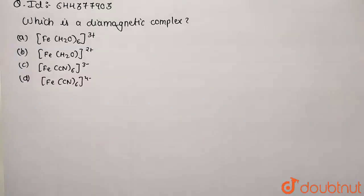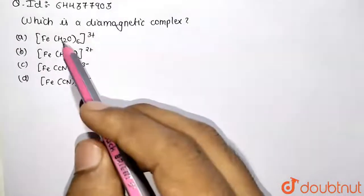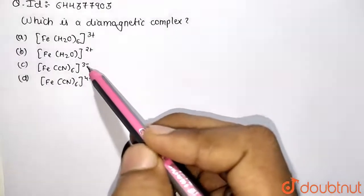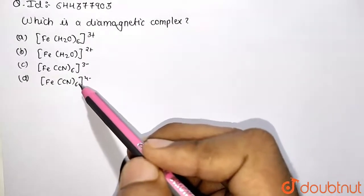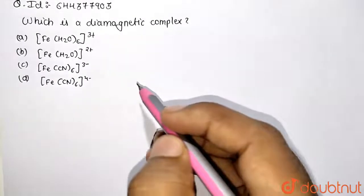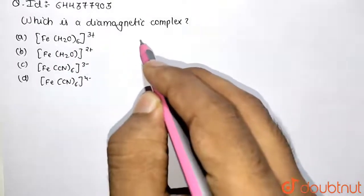we need to work for the diamagnetic complex. Over here we are given different types of ligands. Aqueous is a neutral ligand and it is of weak field strength. CN is a strong field ligand and it is of high strength or stronger field. So let's work upon the following complex, for that we need to calculate the oxidation state.